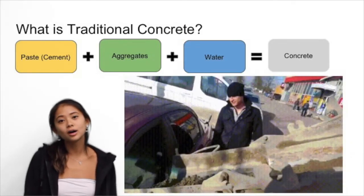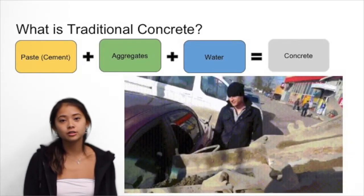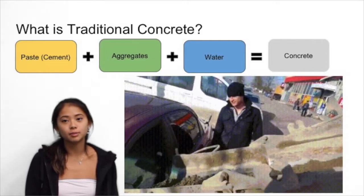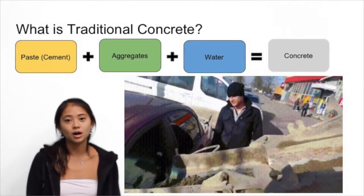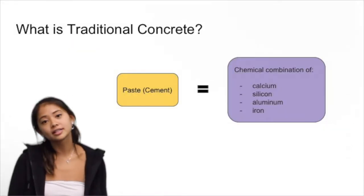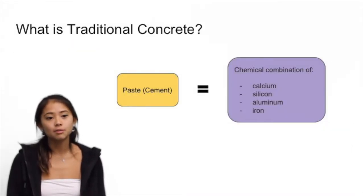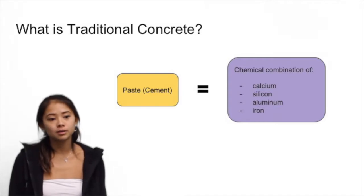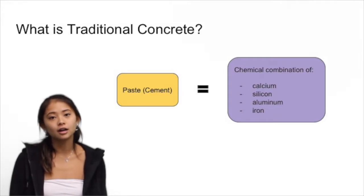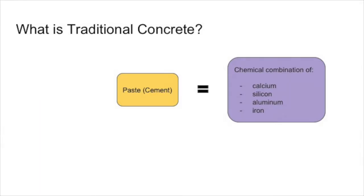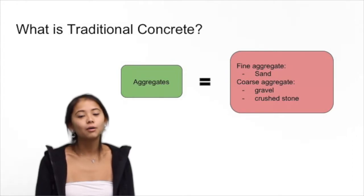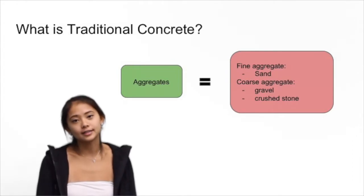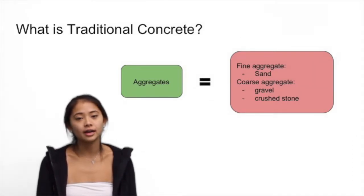So what is traditional concrete? Traditional concrete is made out of cement, aggregates, and water. Cement is a chemical combination of calcium, silicon, aluminum, iron, and other ingredients. Aggregates are made up of fine and coarse particles.